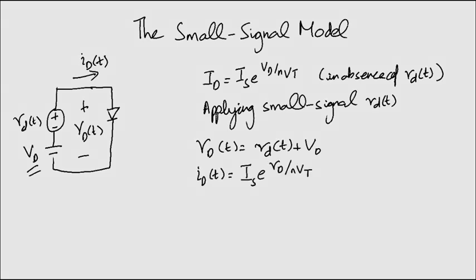The total instantaneous diode current IDT will be this equation. Substituting the first equation into the second one, that is the instantaneous voltage into the current, gives us the instantaneous current value as this equation.